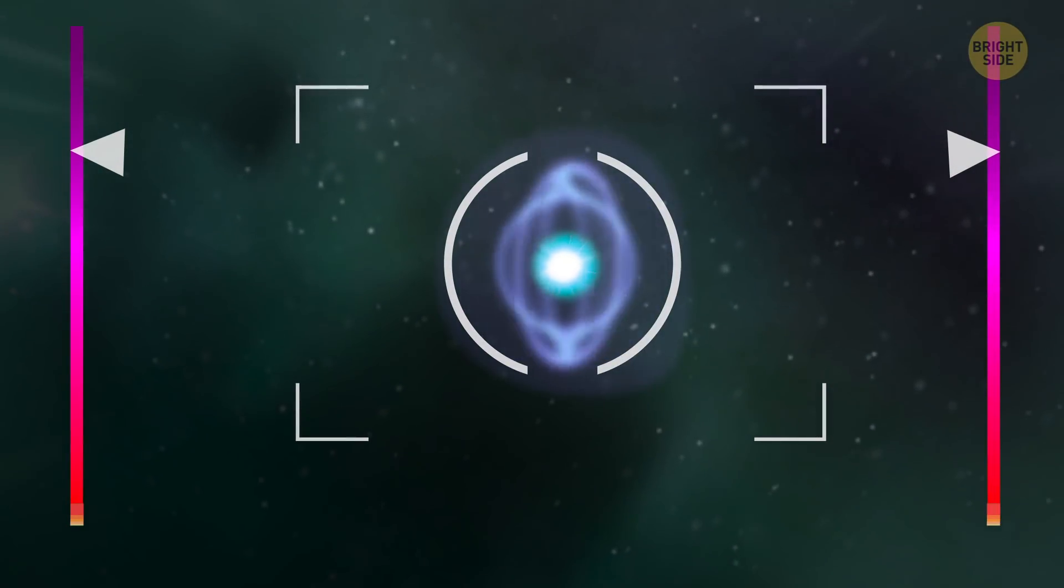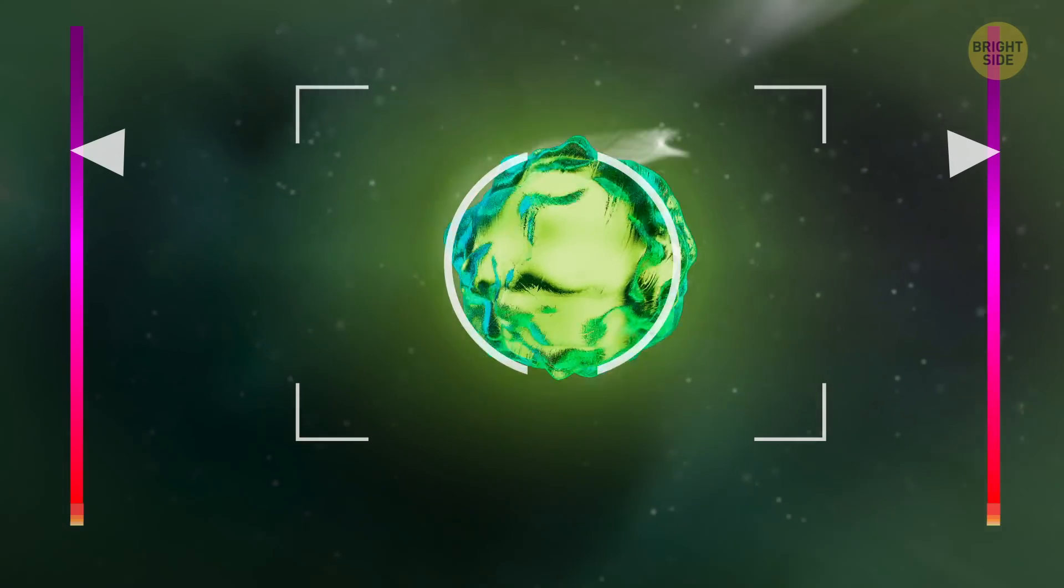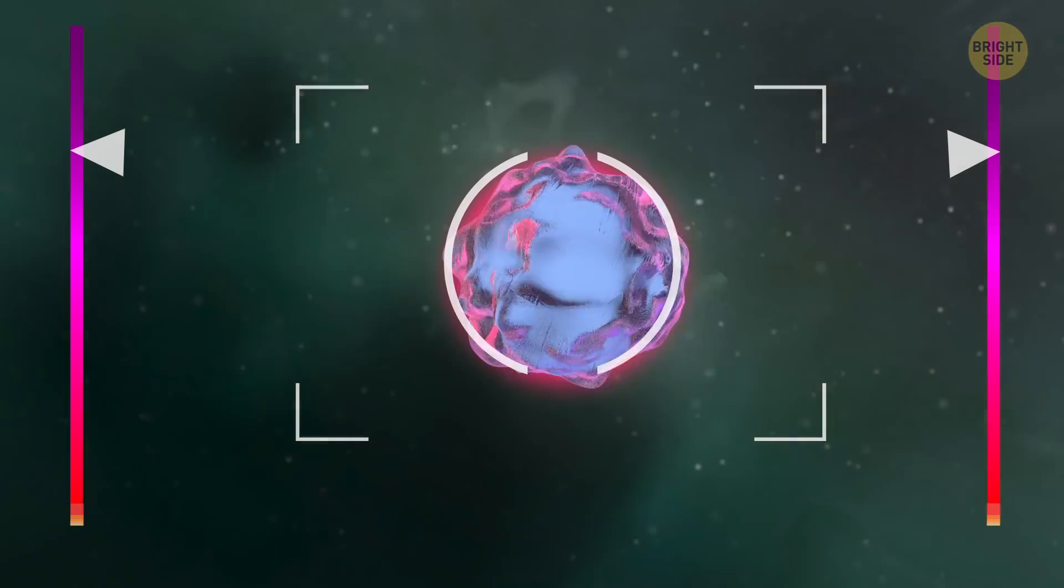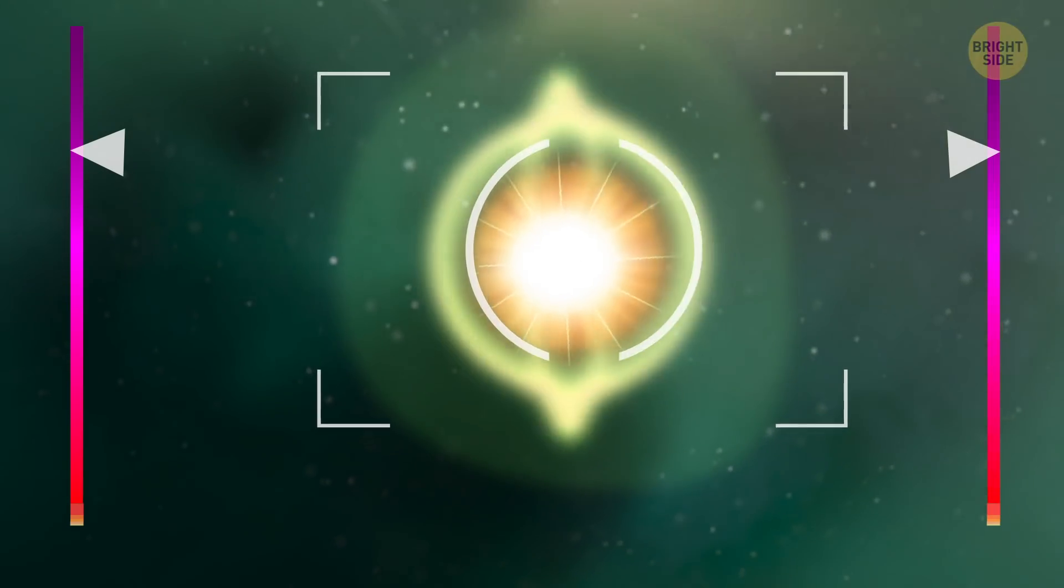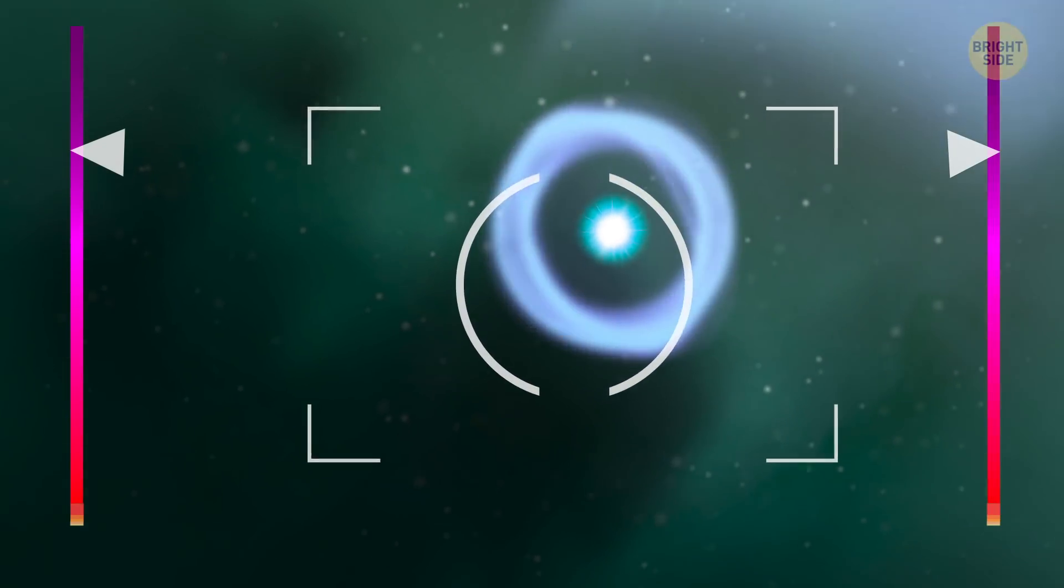Next up are bottom quarks, with the size of just 30 zeptometers. Not a lot can be said about these tiny guys. They have a negative charge, and they quickly transform into other bigger types of quarks.